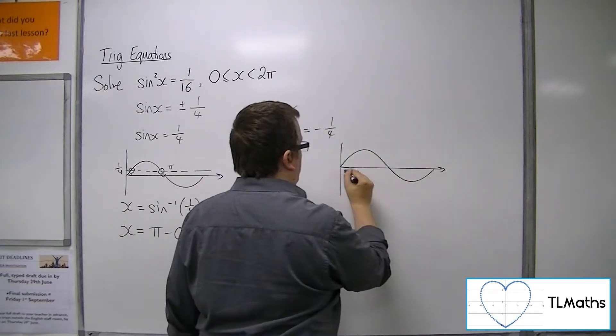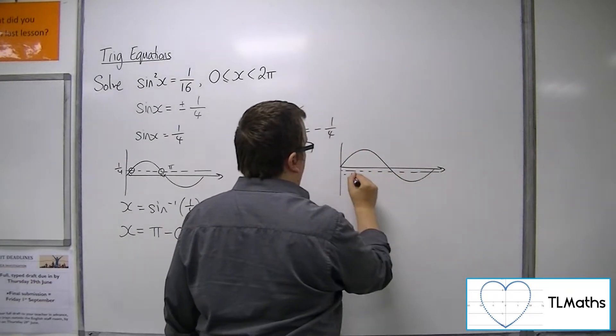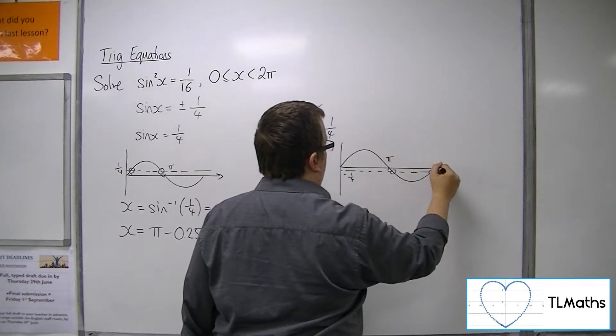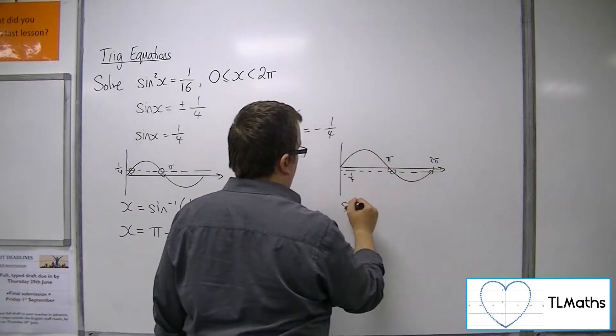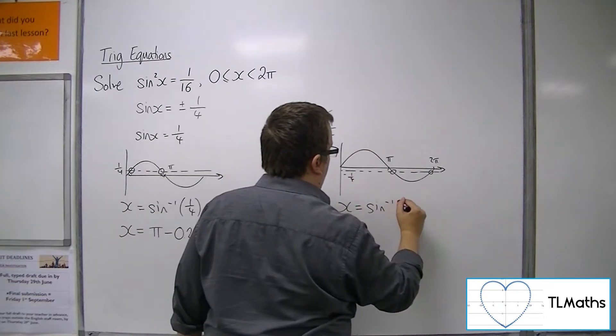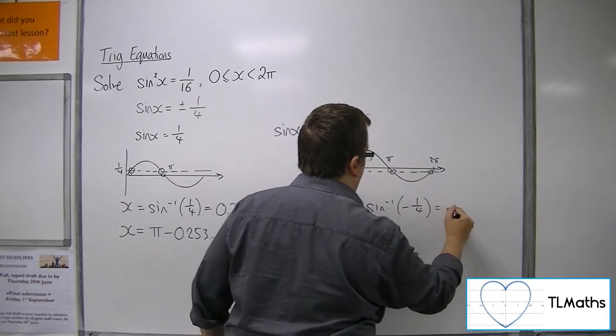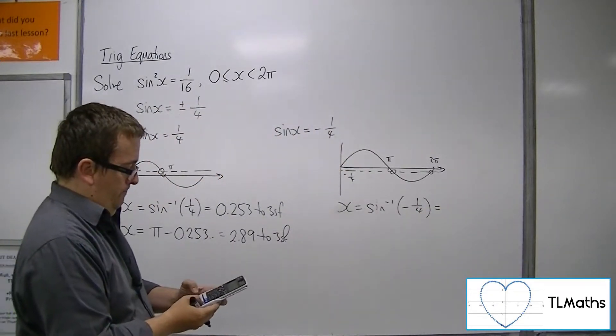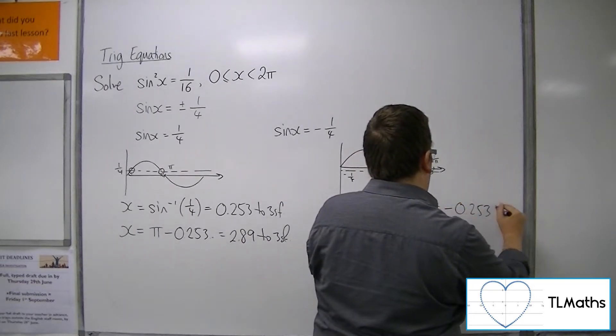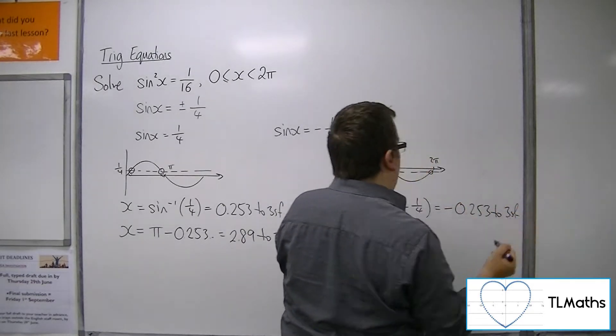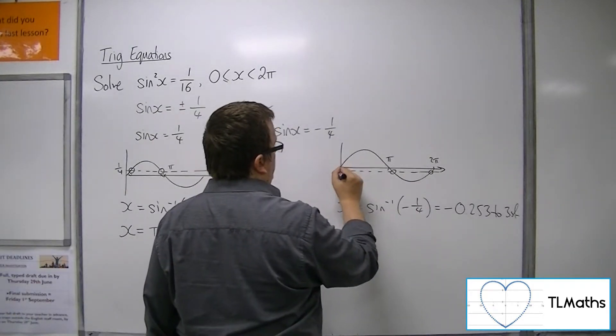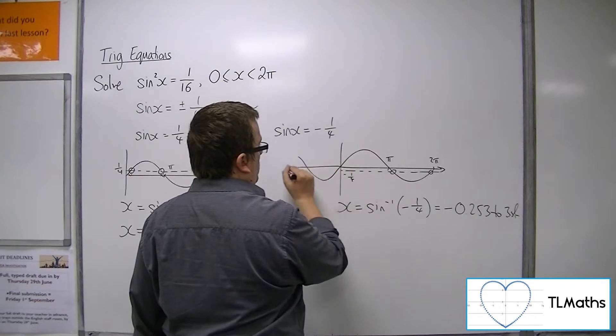Now, as for -1/4, the two solutions are over here. There's π, there's 2π. Now, if I do inverse sine of -1/4, I get -0.253, which is clearly not between 0 and 2π. So that's actually given me the solution over here.